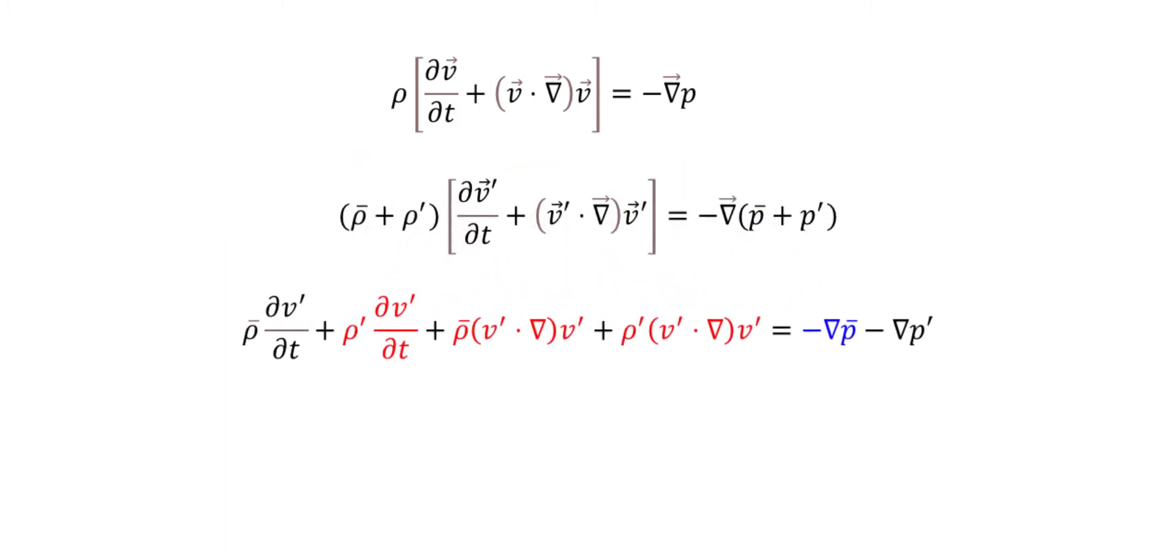Now let's expand this expression, and then we can see here some red terms that are second or third order terms. Basically, we're assuming that the fluctuation prime quantities are small with respect to the mean, which means that the red terms can be ignored.